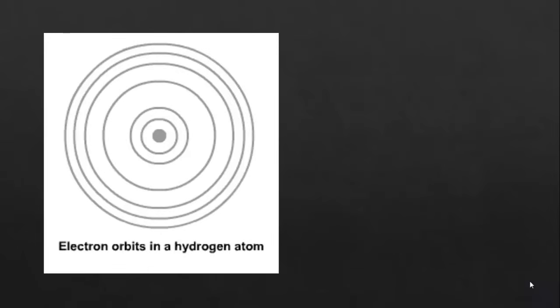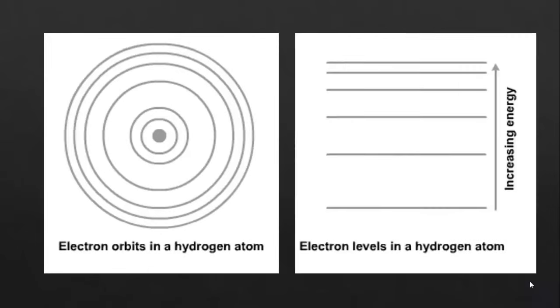We find it simpler to draw them as straight lines instead of circles, where the centre of the circles are represented by the bottom line. The electrons with the lowest energy are nearer the nucleus, or nearer the bottom of our diagram on the right. An electron can move up to a higher energy level by absorbing energy, or drop to a lower energy level by releasing energy.